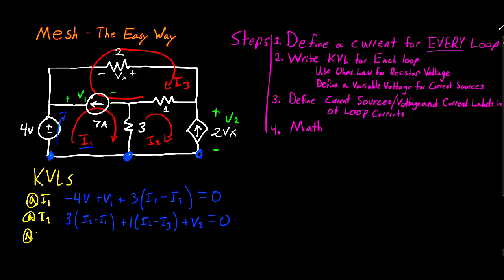Now for the final current loop, I3, starting at this position, the first component is the 2-ohm resistor, which also has the label Vx. I'll define Vx later, and write the Ohm's Law expression for that component. Unlike the previous resistors, only one loop goes through the 2-ohm resistor, so the potential is simply 2 × I3. The next component is the 1-ohm resistor: plus 1 times (I3 minus I2), opposite of what we wrote in the I2 loop. Then we reach the current source with the V1 label — since I3 enters the negative side of V1, we write minus V1, then set the loop equal to zero, finishing step 2.